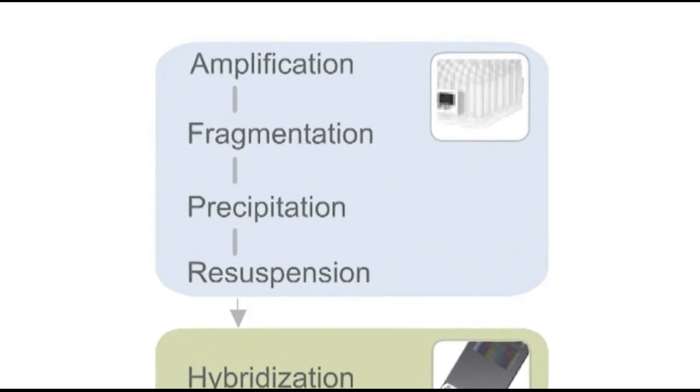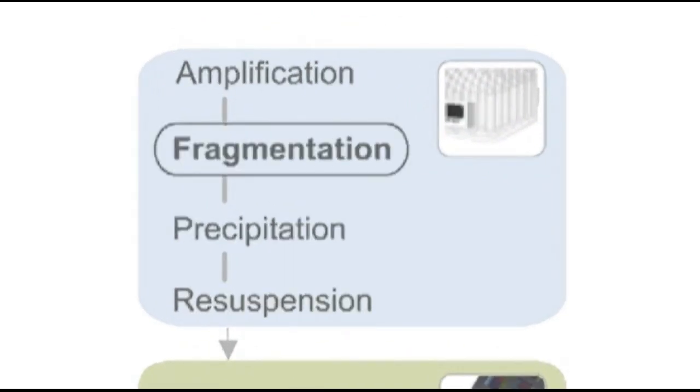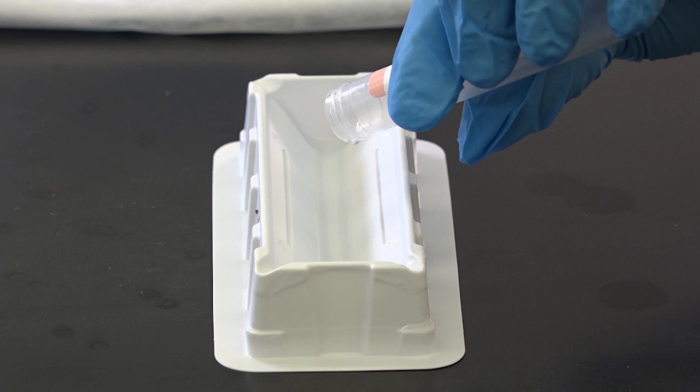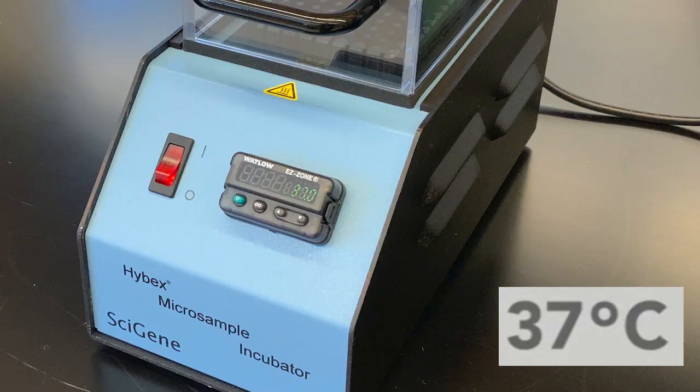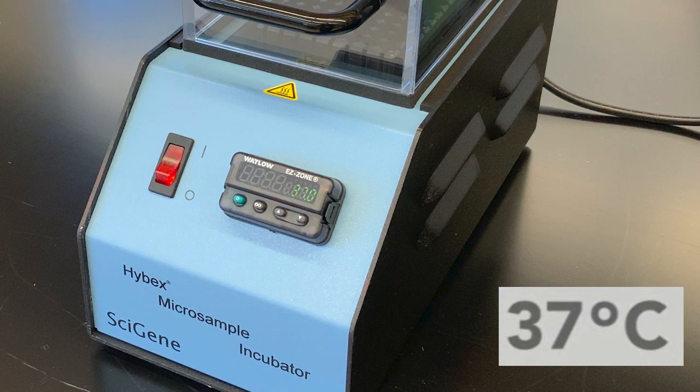The next step in the Infinium assay is fragmentation. Remove the fragmentation reagent from the freezer, allow to thaw, and pour into a disposable trough. Set the heat block to 37 degrees Celsius.